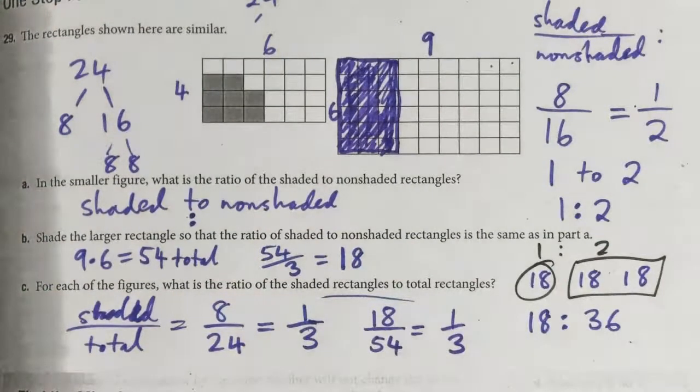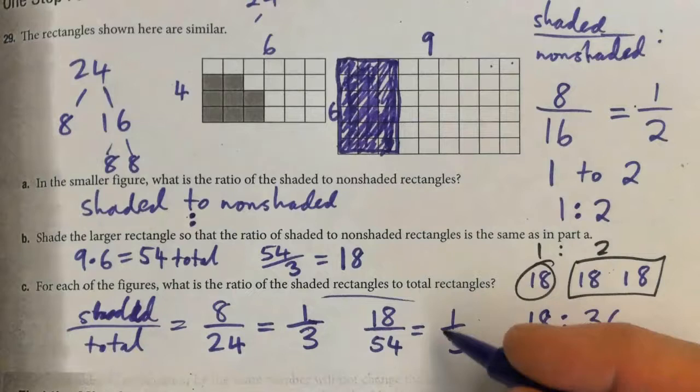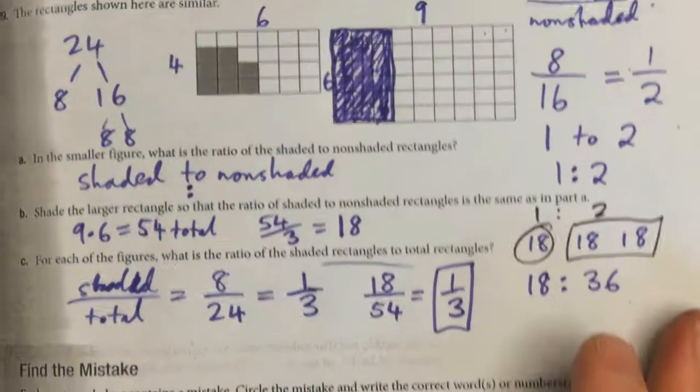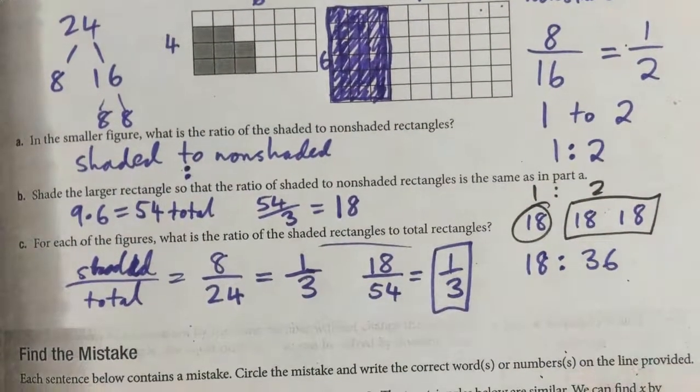What is the ratio of the shaded rectangles to the total? The answer is one-third, which can also be written as 1 to 3, or 1:3 with the colon.